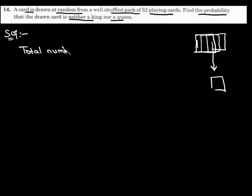From a pack of 52 cards, one card is drawn in 52 ways. So, the total number of outcomes is equal to n of S, which is 52.